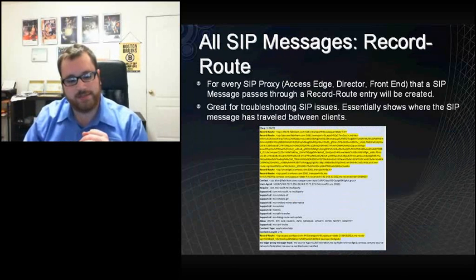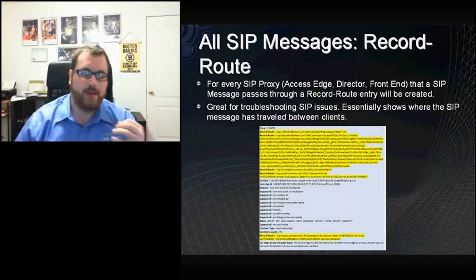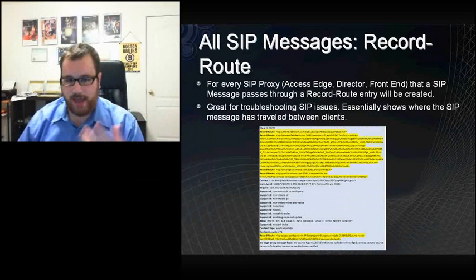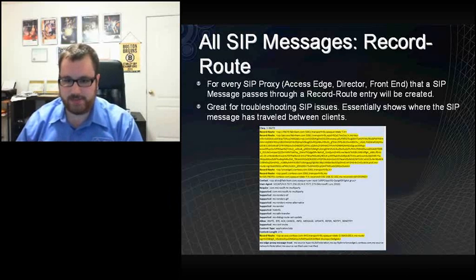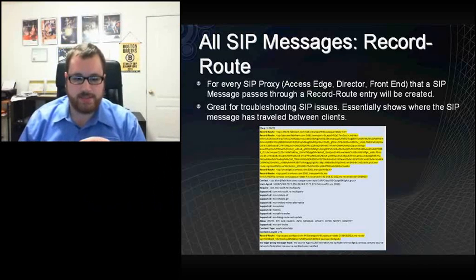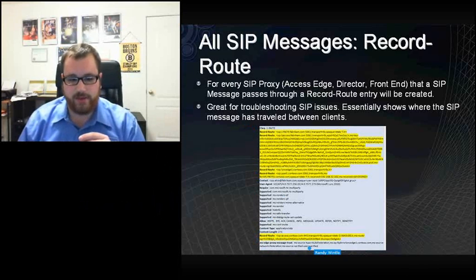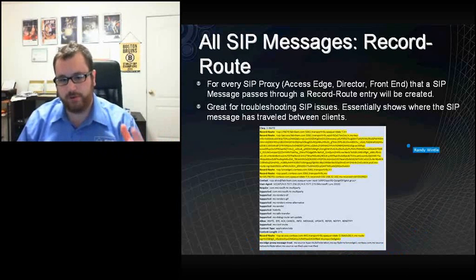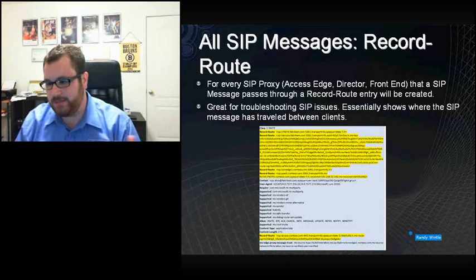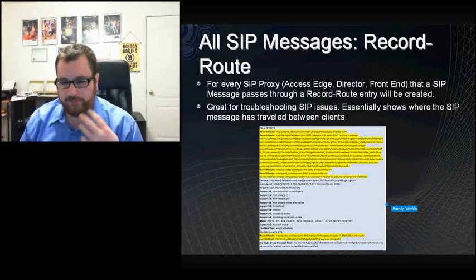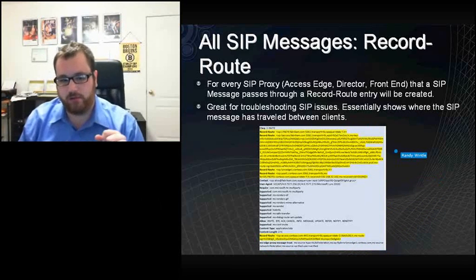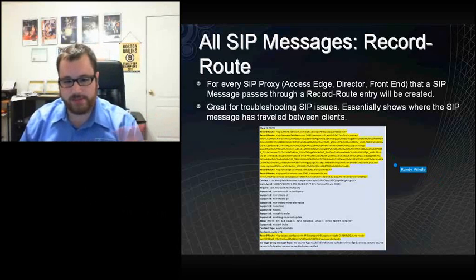One other key thing about SIP messages: for every SIP proxy — whether it's an Access Edge, director, or front end — there will be a record route created. Any SIP message will get a record route stamped in it for every server it passes through. This is great for troubleshooting — you can really see where everything is going. This is all encrypted, so you can only see it if you run Snooper on the client or server side. If you're an admin trying to figure out routing issues, search for 'record route' and you'll be able to see pool names, server names, and IP addresses for everything it passed through.